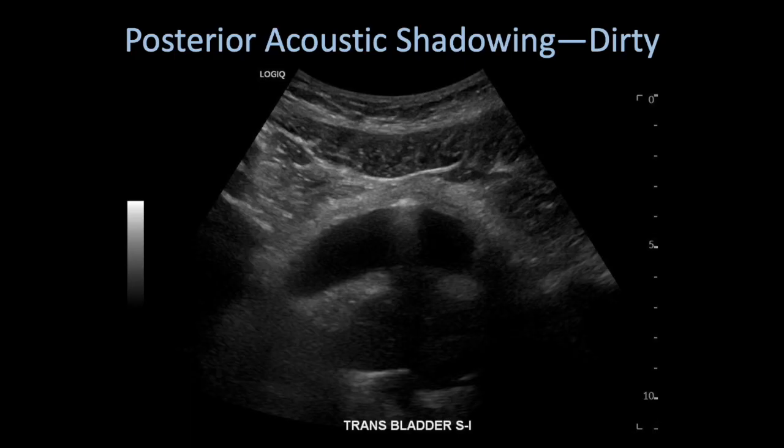Going back to our example here, you can see the echogenic structure within the bladder, which represents air, that you're getting reflection off of. You're getting absorption as well, which is causing the posterior acoustic shadowing, but you're also getting reflection from fascial planes, and that's leading to the dirty acoustic shadowing that you can see here.